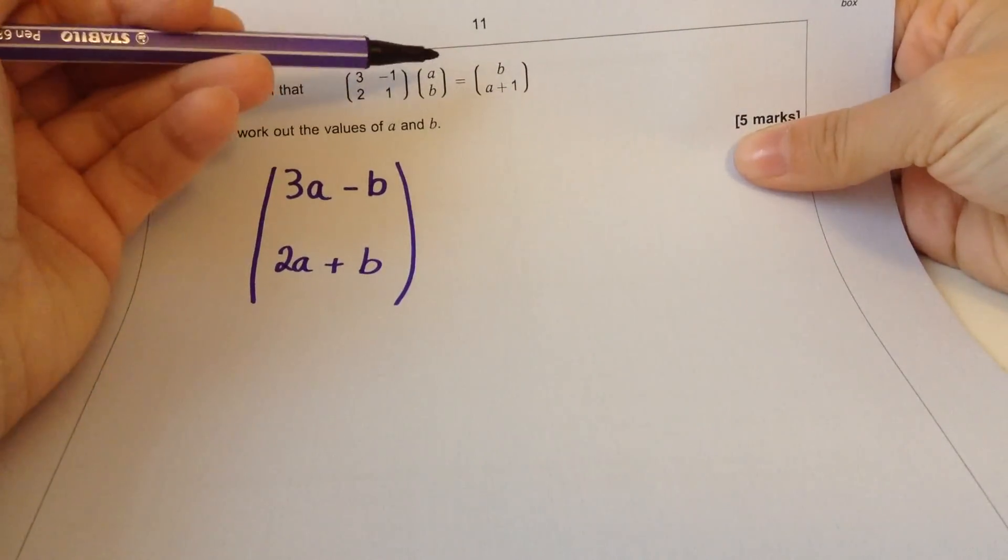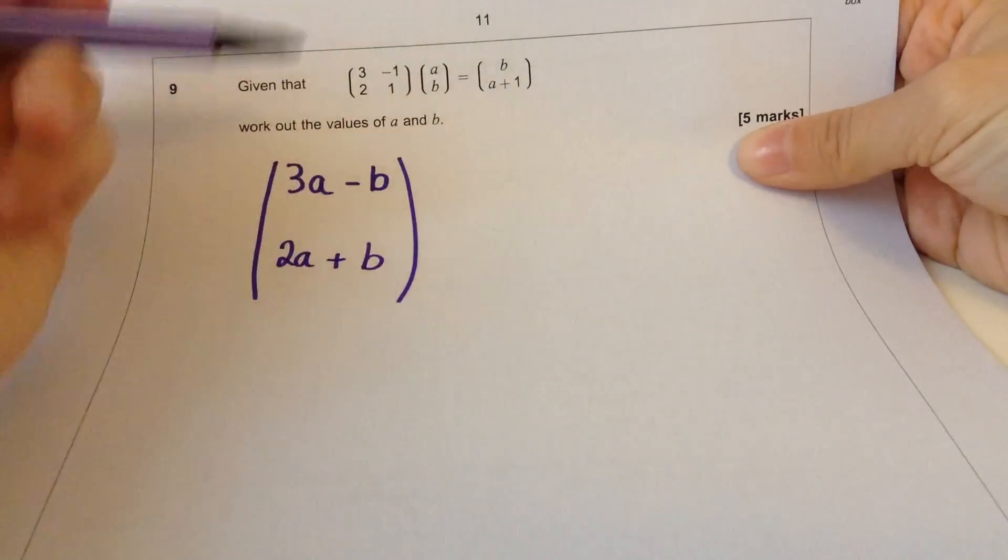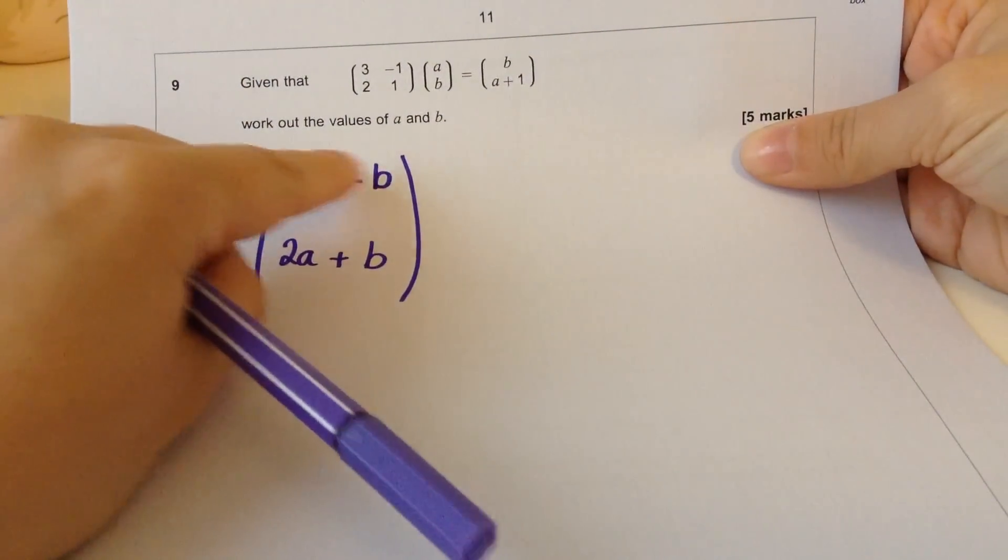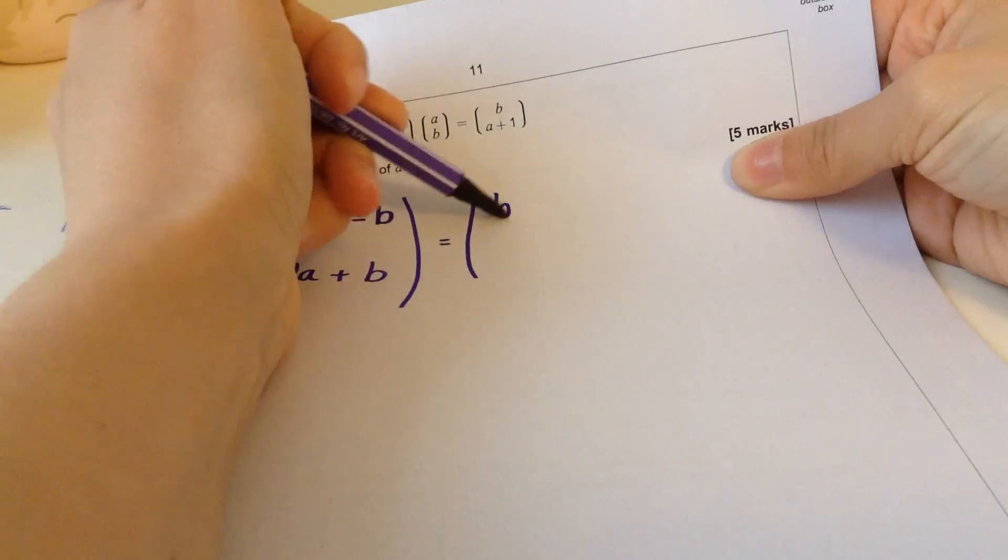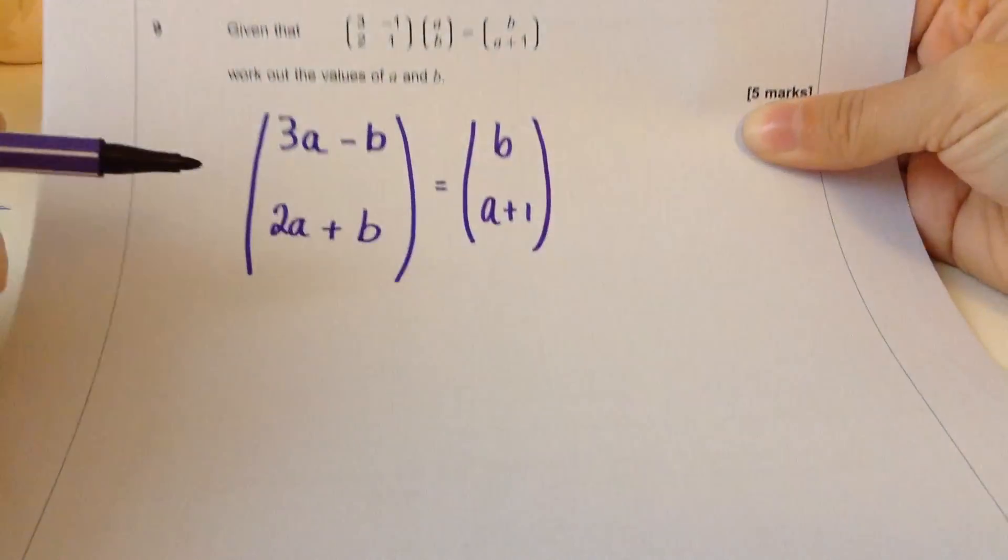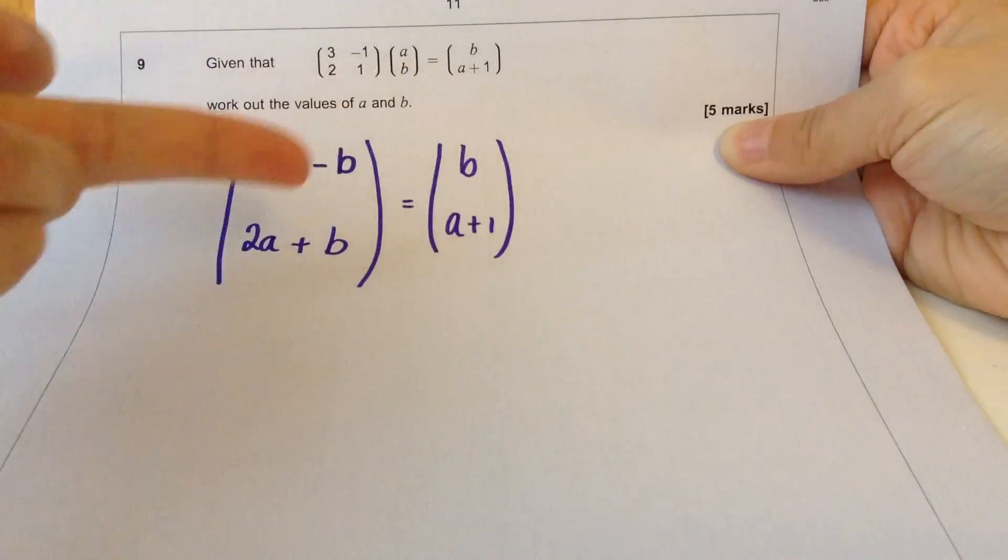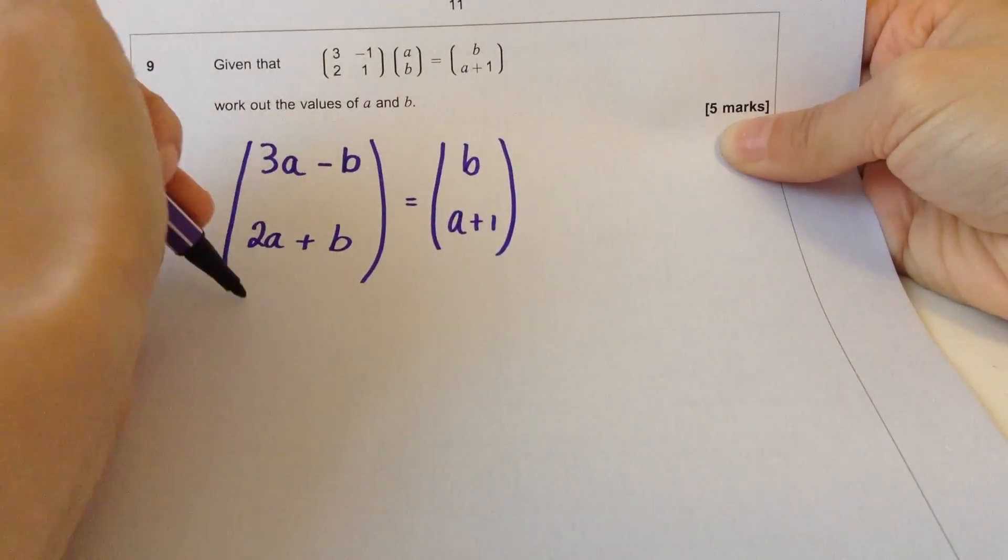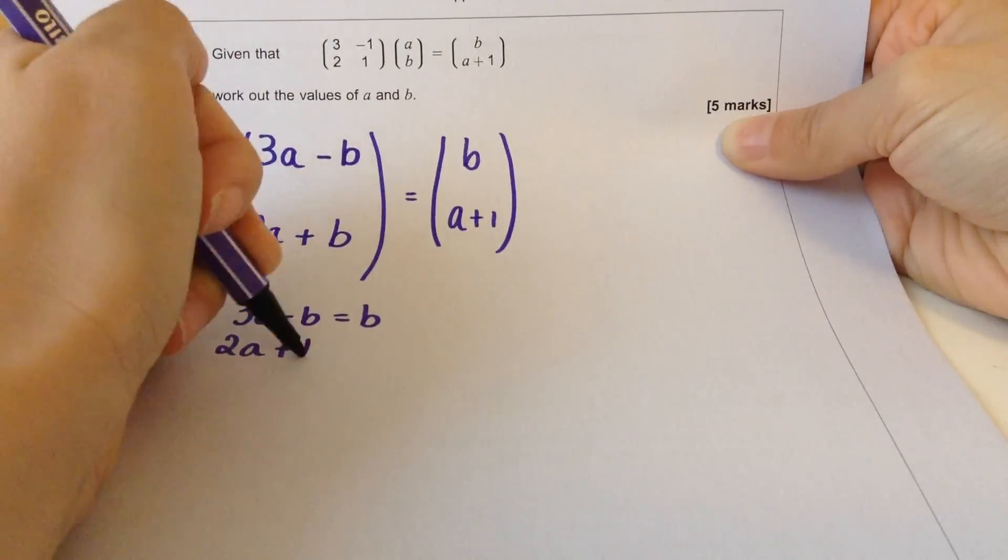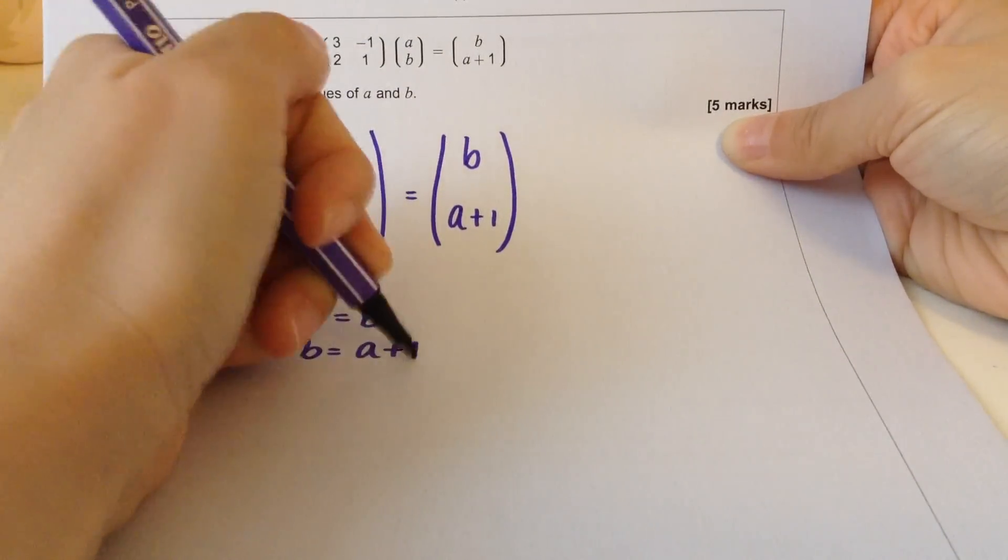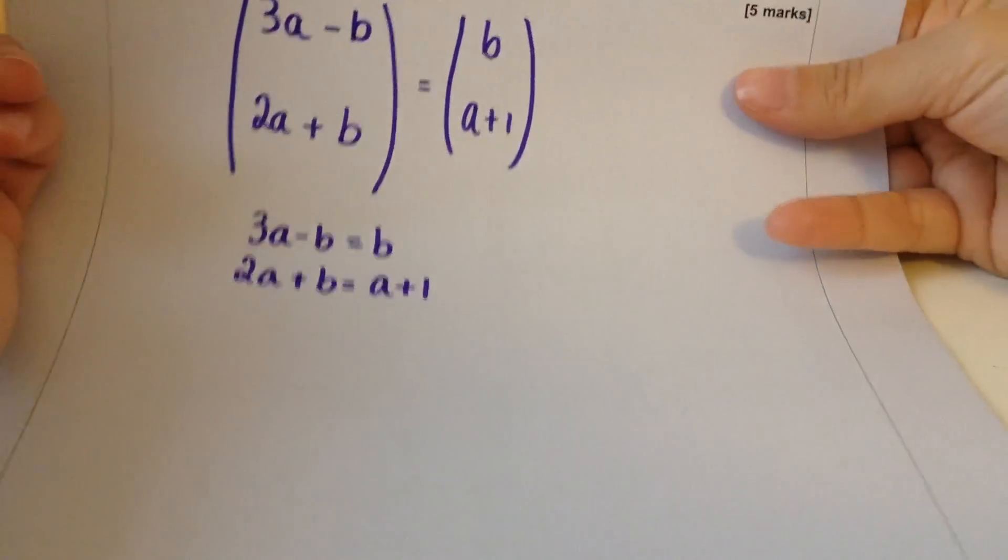So when you times a matrix by a vector, you end up with just a vector with two values in it. This is one element and this is one element, and that has to equal b, a+1. So that means this has to equal that, and that has to equal this. We have two equations with two unknowns, simultaneous equations.